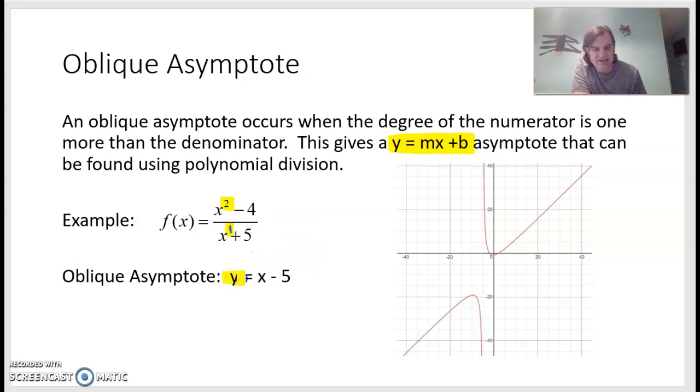But the oblique asymptote for this is y equals x minus 5. And I just want to show it to you on the graph first. So to do x minus 5, we would have a y-intercept at negative 5, which is around here. And then it has a slope of 1, which means up 1 over 1, which could mean up 5 over 5. So I'm just trying to show you what this asymptote looks like. It goes through all these perfect little points.